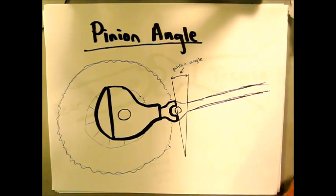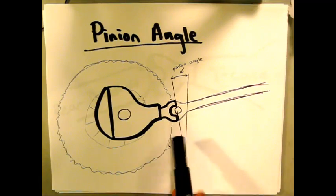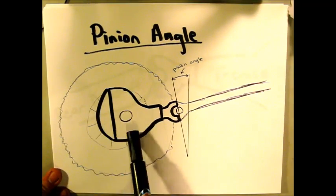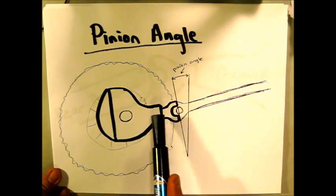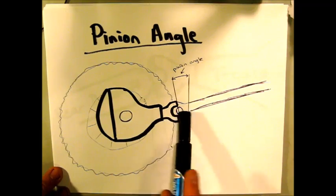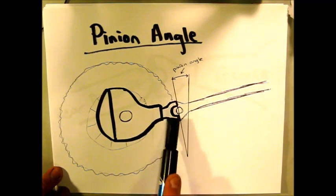This is another one of my great drawings of a rear axle. You can see your tire here, a rear end. This would be your axle tube, your diff cover right here, driveshaft, and your yoke.